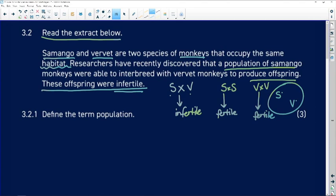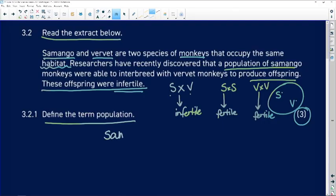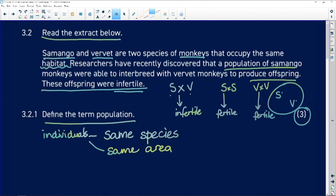Look, three marks. We need to say three specific things about what defines a population. And here are your three things. Same species. So it's a group of individuals of the same species living in the same area.